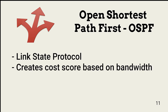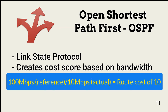Open Shortest Path First, or OSPF, is a link state protocol and also a type of interior gateway protocol. Instead of using the number of hops like distance vector protocols, OSPF determines the most efficient path by looking at bandwidth and calculating route cost. At a high level, this is done by dividing a reference bandwidth — the expected bandwidth based on topology — by each interface bandwidth. The lower the cost, the better.